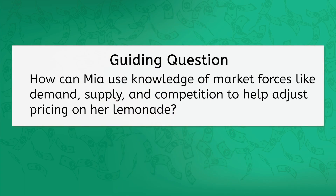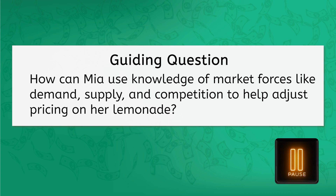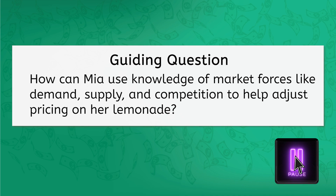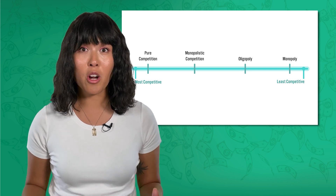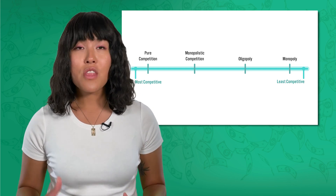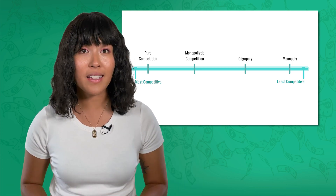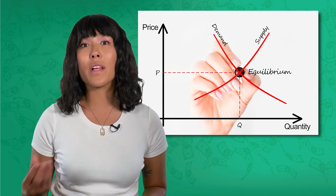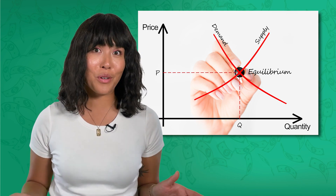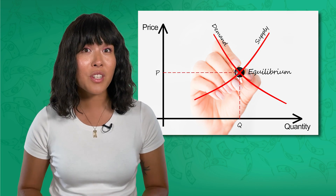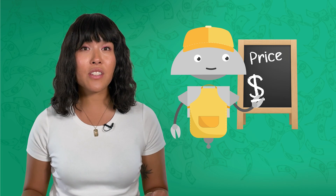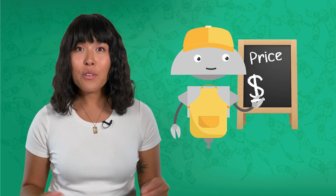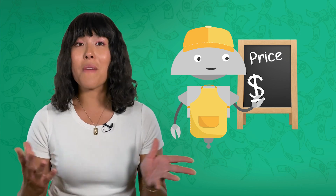Let's take a minute to think about our last guiding question. How can Mia use knowledge of market forces like demand, supply, and competition to help adjust pricing on her lemonade? First, Mia needs to consider how competition in her market impacts her ability to set prices — the more competition in a market, the less power a producer has over price. Then she needs to consider demand and supply. Finding that sweet spot where people are still willing to buy her lemonade but she is still willing to sell it is difficult, but it ensures she reduces risk as an entrepreneur. Understanding how changes to demand and supply impact the market allows Mia to be proactive in setting price to maximize profit.